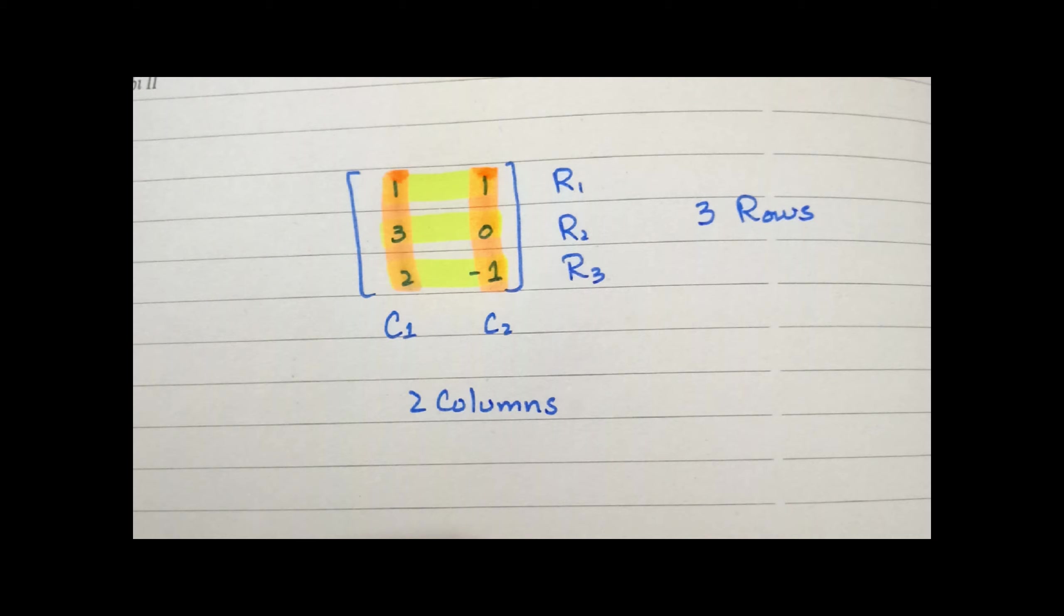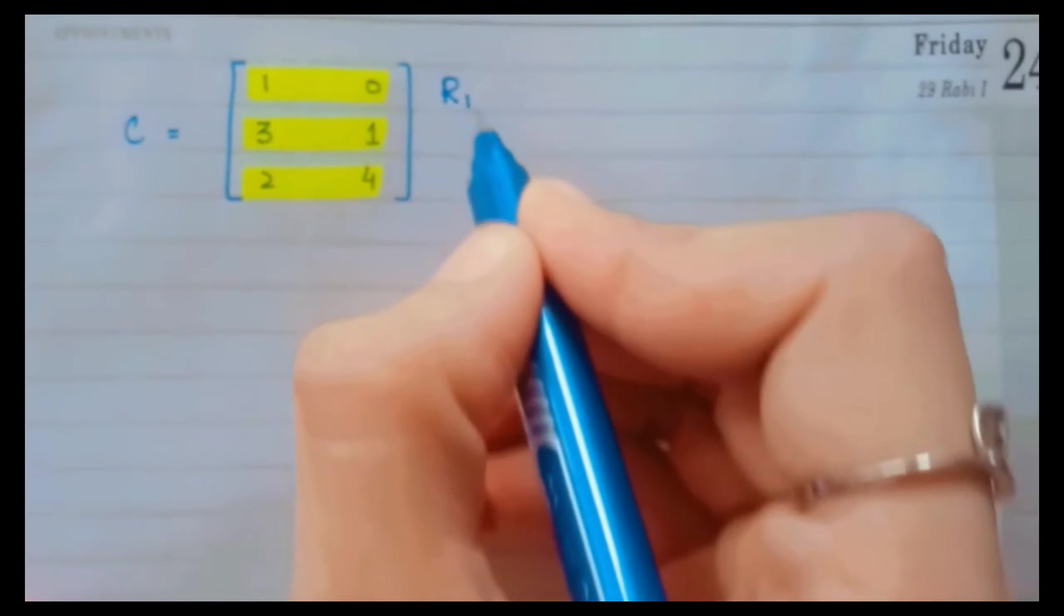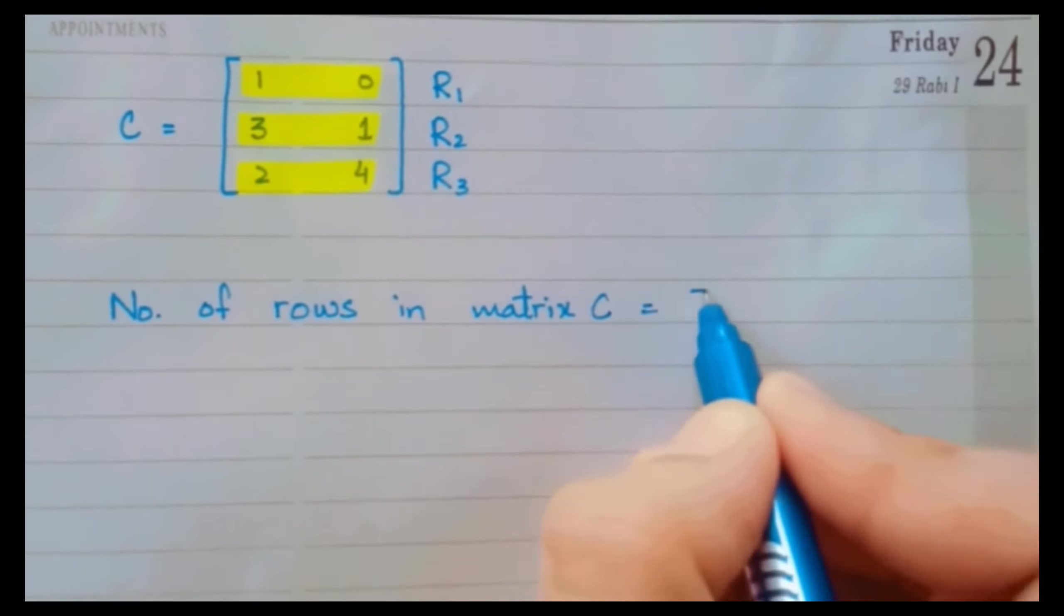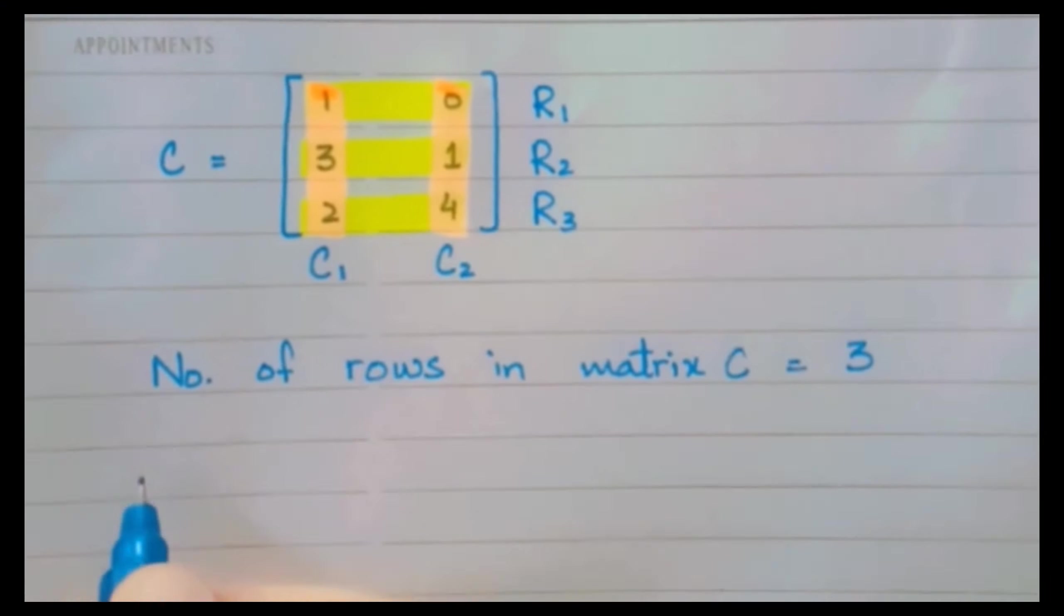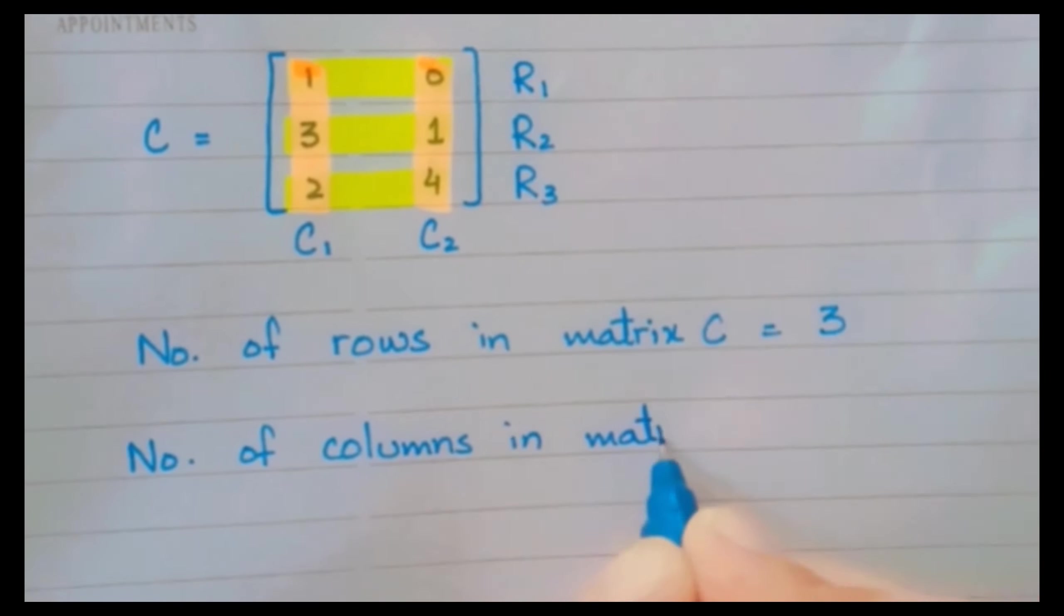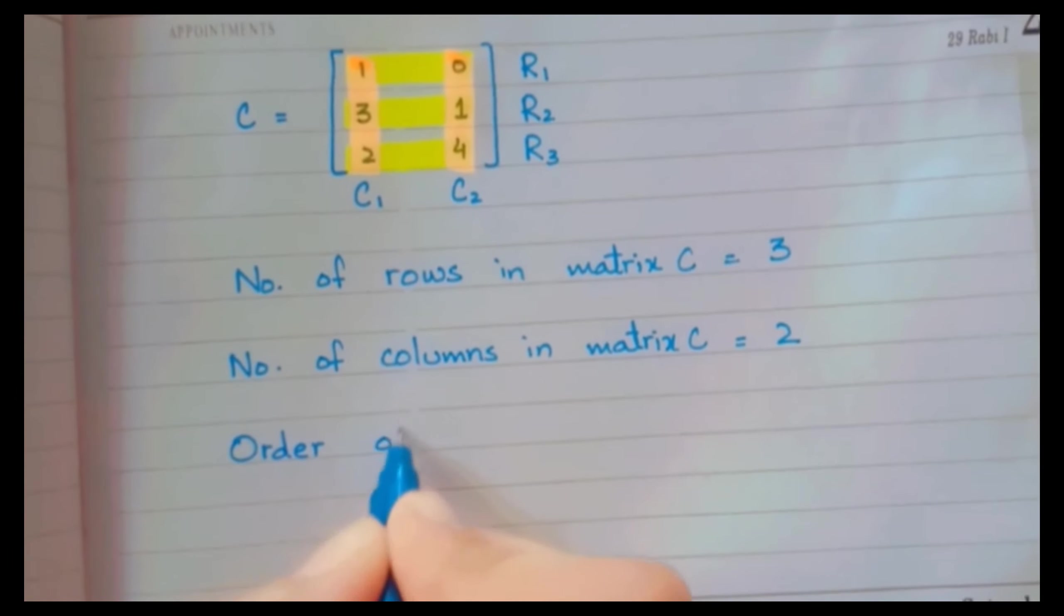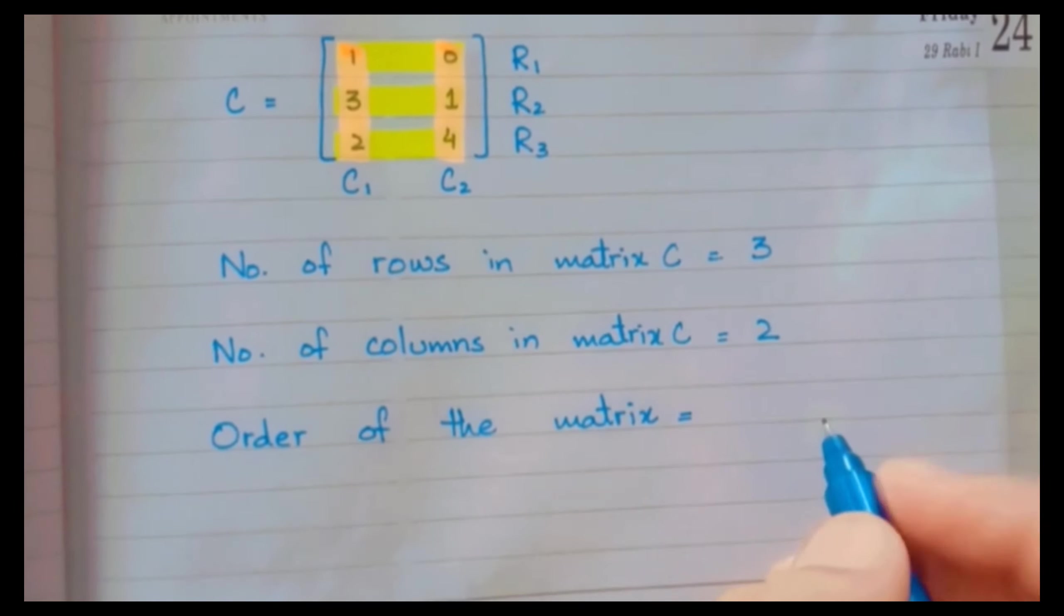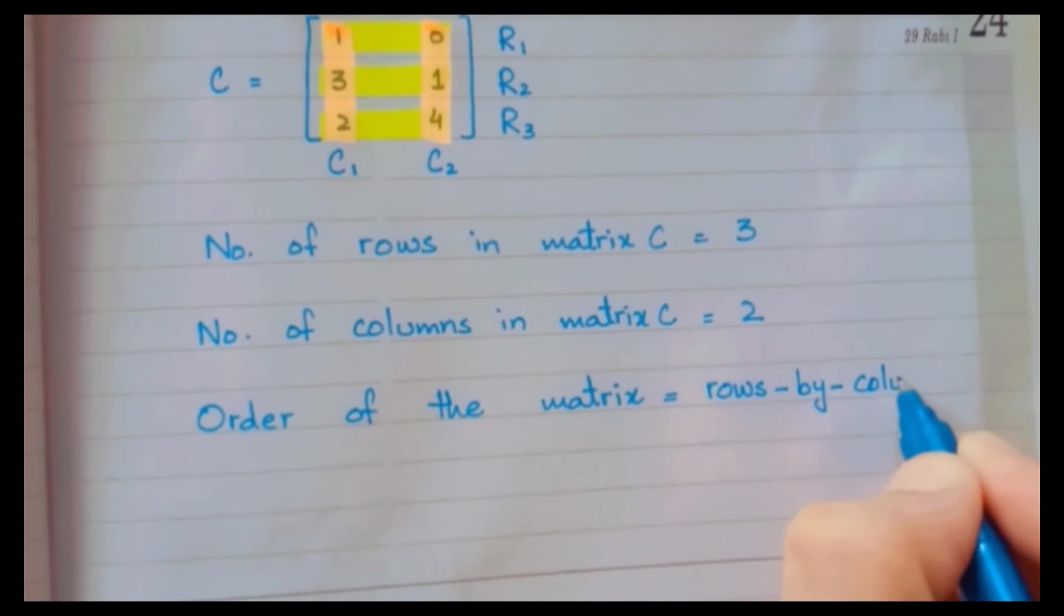Now what is the order of a matrix? If we are having a matrix C and we highlight the horizontal lines, we would be having three rows. And if we highlight the vertical lines, then we would be having two columns. And if we write the number of rows by number of columns, then we would be having order of the matrix C. You have to write the number of rows first and the number of columns later. You will write it 3 by 2. 3 by 2 is the order of the matrix C.